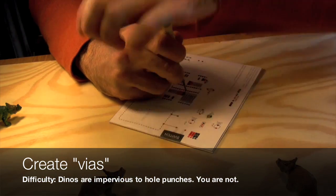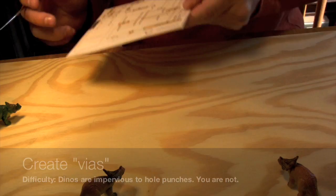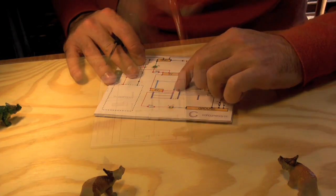Next, you need to poke holes in your Cardboard Duino. In the electronics world, they call these vias. Or are they vias?